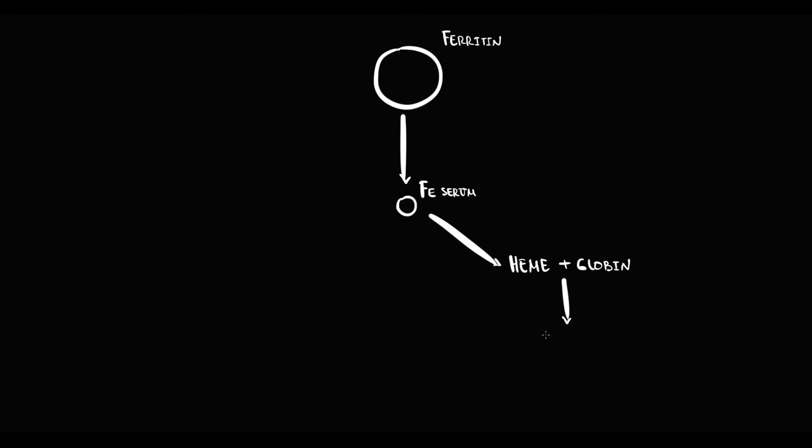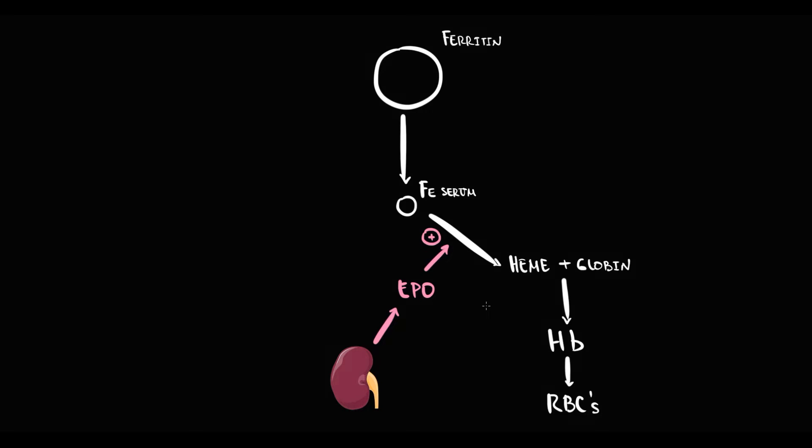Heme, together with globin, forms hemoglobin inside the red blood cells. We also know that kidneys produce erythropoietin, and erythropoietin stimulates the production of red blood cells.